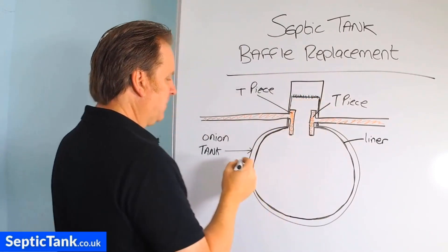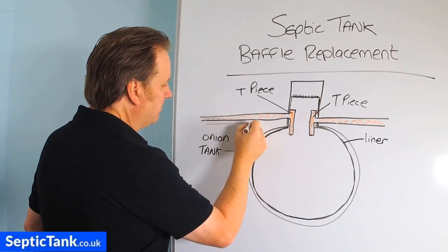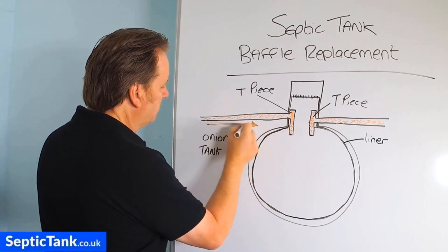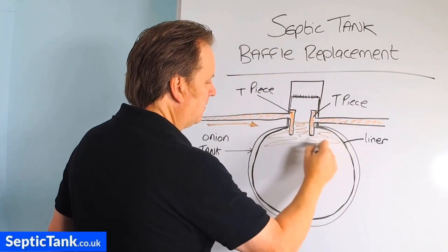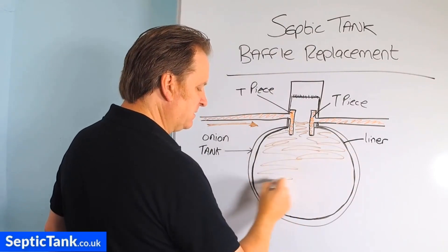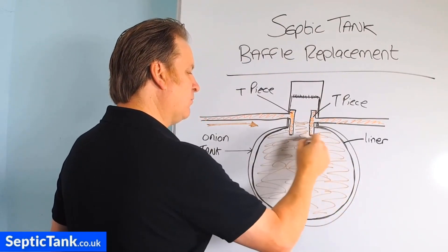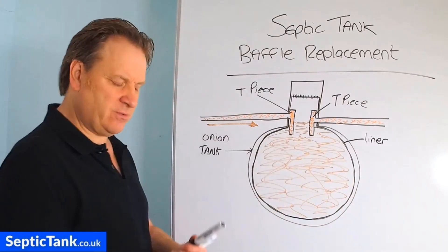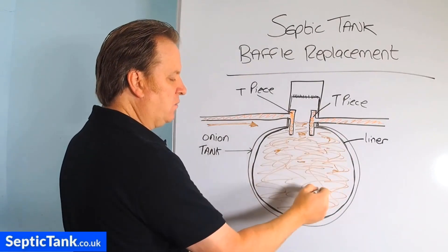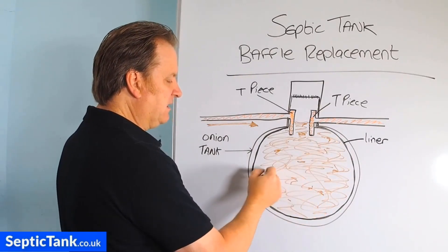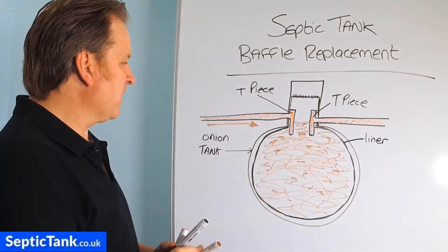What happens is the wastewater comes into the septic tank and then fills up the septic tank. I've drawn it in brown because although wastewater sounds like a very clean name, in reality it's murky, it's brown, it's got lots of bits and bobs floating around in it. The reality of a septic tank is it's like a big stomach.